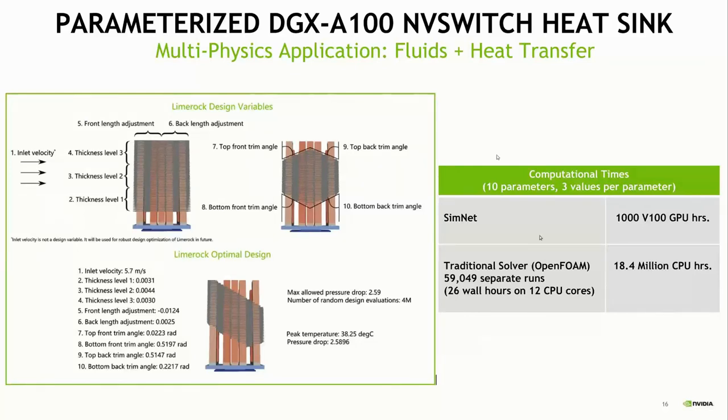We can train a solution for this in essentially one shot. With SimNet, that takes about 1000 GPU hours. Then we can do some parametric optimization to generate this geometry, which is the optimal geometry. If we were to do this with a traditional solver, let's say OpenFOAM, we'd need about 60,000 separate runs for each parameter value and that would total to 18.4 million CPU hours. But because we're able to train the solution in one shot for all of these parameters, it becomes much more efficient to do that in SimNet.